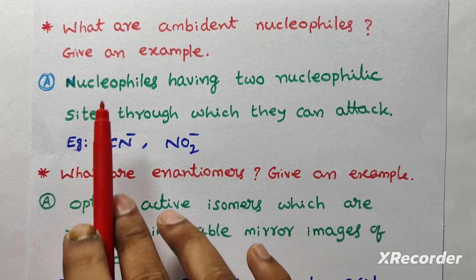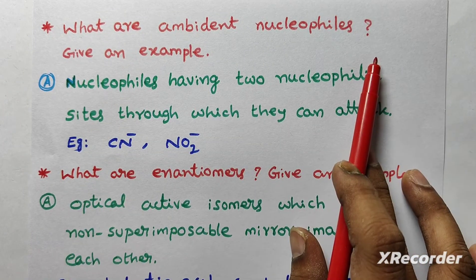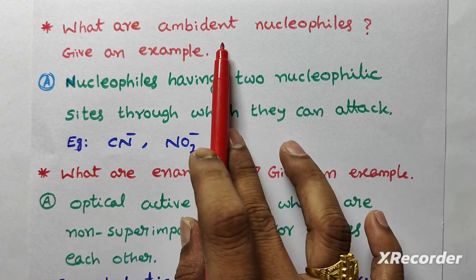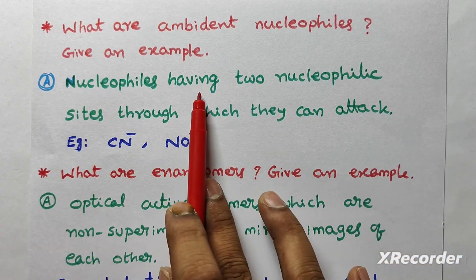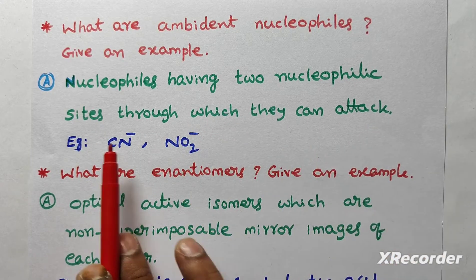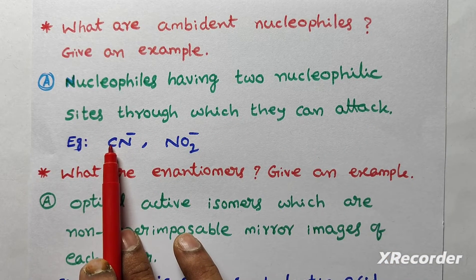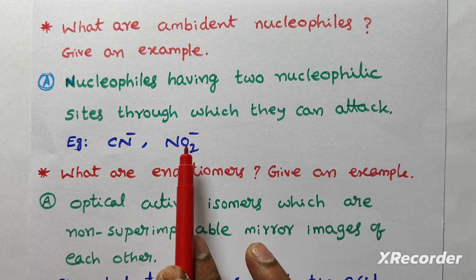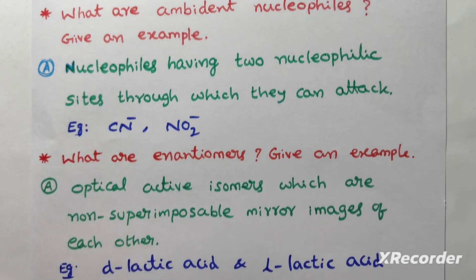These definitions are also very important. You can take screenshot and write it on your class notes. What are ambident nucleophiles? Give an example. Nucleophiles having two nucleophilic sites through which they can attack. For example, CN- has nitrogen as well as carbon. NO2- has nitrogen as well as oxygen.